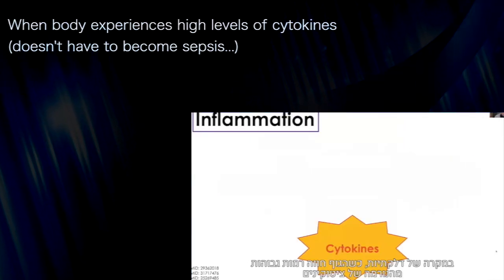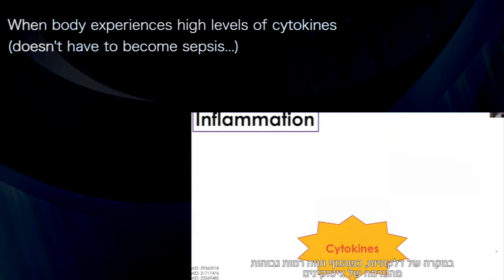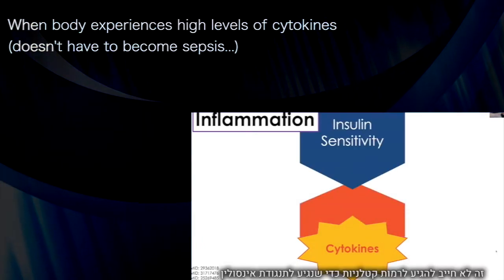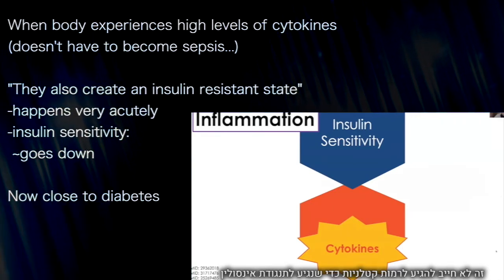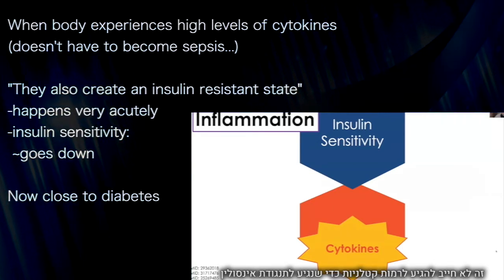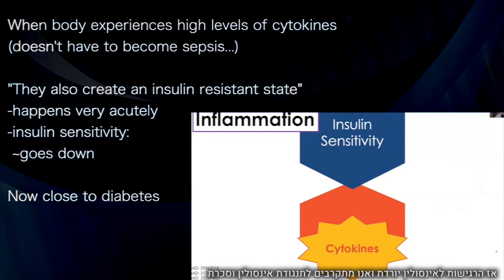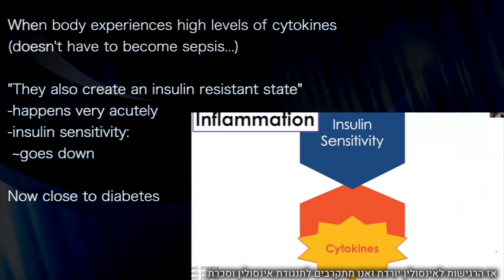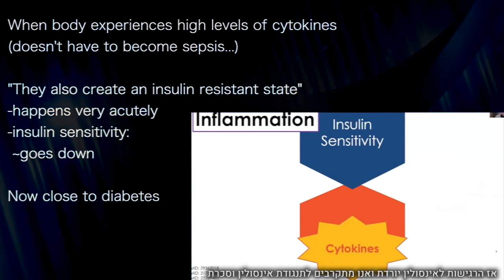In the case of inflammation, when the body experiences higher than normal levels of cytokines — it doesn't have to reach a level of sepsis — they also create an insulin resistant state. This is something that happens very acutely. And so insulin sensitivity starts to go down, and now we're moving ever closer towards full-on insulin resistance and diabetes.